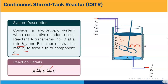Cb is the concentration of B and Cc is the concentration of component C inside the CSTR. A stirrer mixes the liquid uniformly. The reactor cross-sectional area is AT, and H is the liquid holdup — the height of the liquid inside the CSTR. The liquid exits with volumetric flow rate F, fluid density ρ, and outlet concentrations Ca, Cb, and Cc.